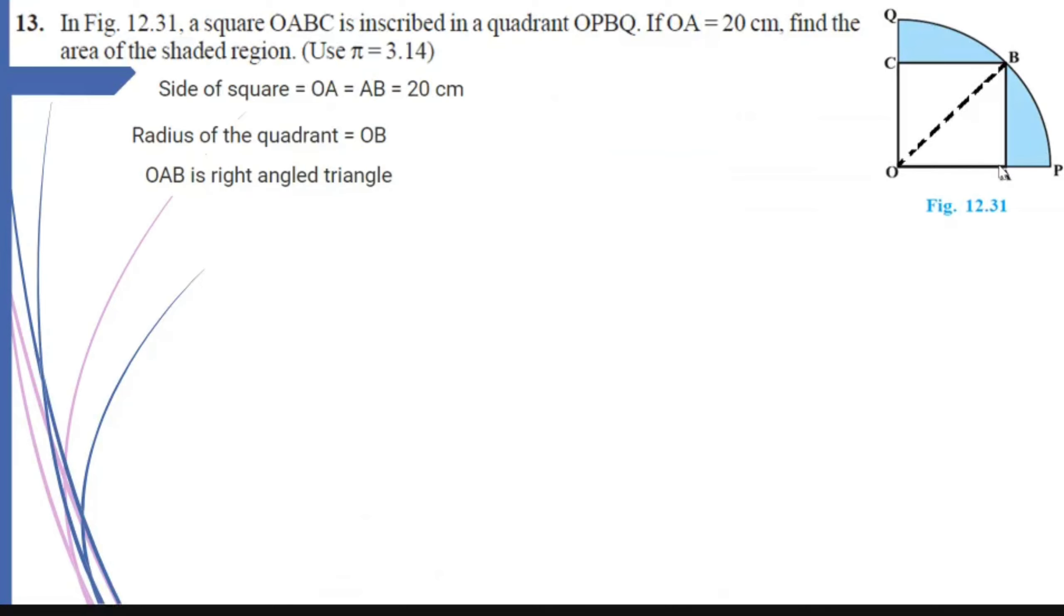And since OAB is a right-angled triangle, I can use Pythagoras theorem. OB squared equals AB squared plus OA squared. That is equal to 20 squared plus 20 squared. So OB squared comes out to be 400 plus 400, which is equal to 800. That means OB comes out to be square root of 800, which is equal to 20 root 2 cm.